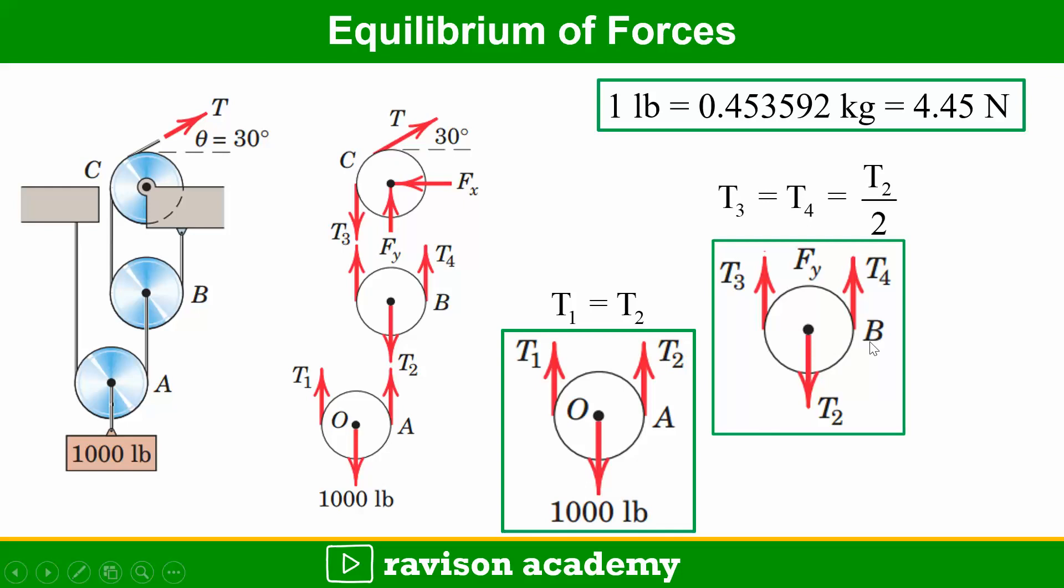For the free body diagram of pulley B, T2 will be pointing downwards and T3 and T4 will be pointing upwards. Here T3 is equal to T4, that is equal to T2 by 2.